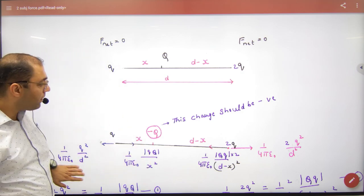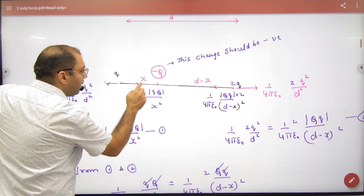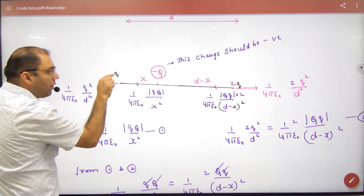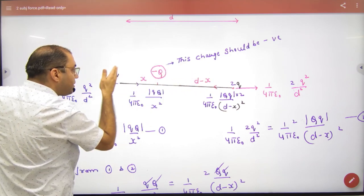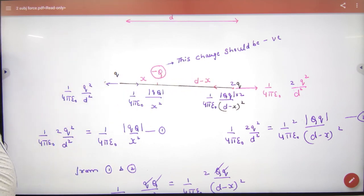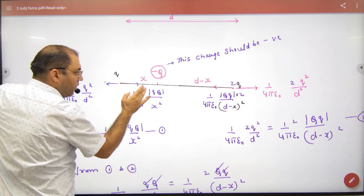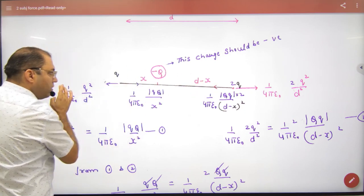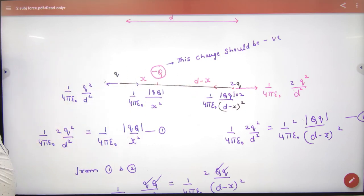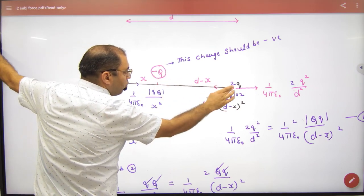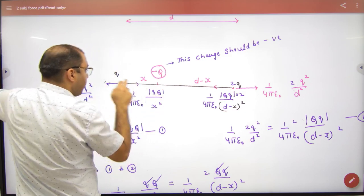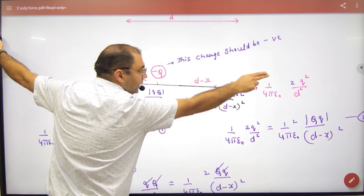Capital Q didn't work, so this charge must be negative. Now what benefit from negative? The benefit is negative charge will attract this Q toward itself. And that positive charge will repel it. So negative will attract positive, positive will repel positive. Now talking about this side: minus Q will attract 2Q, and Q will repel 2Q.